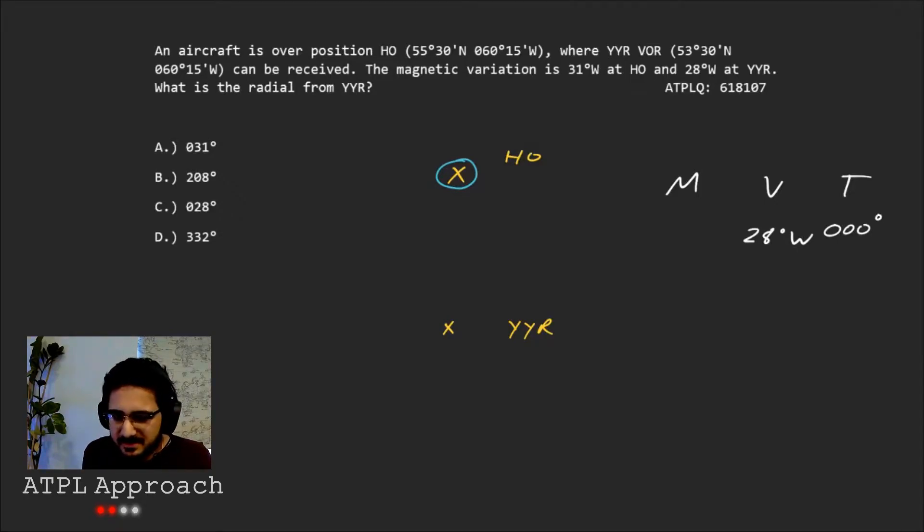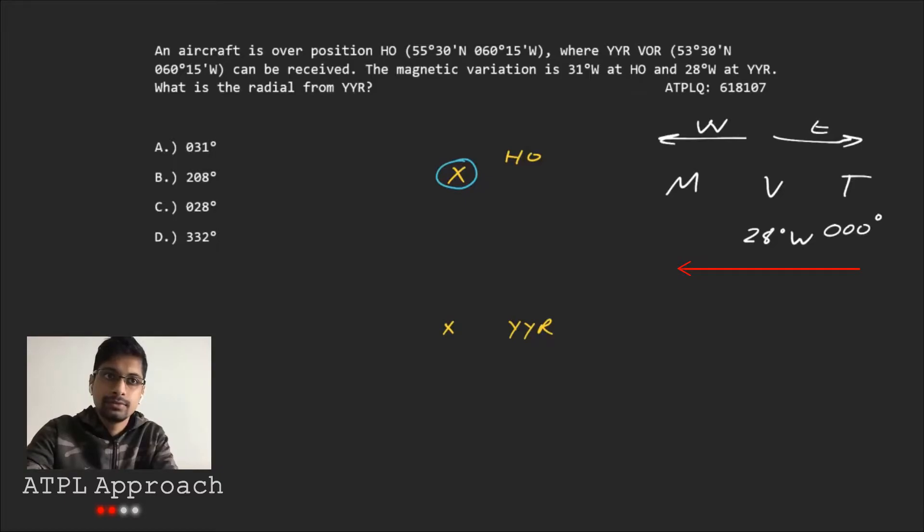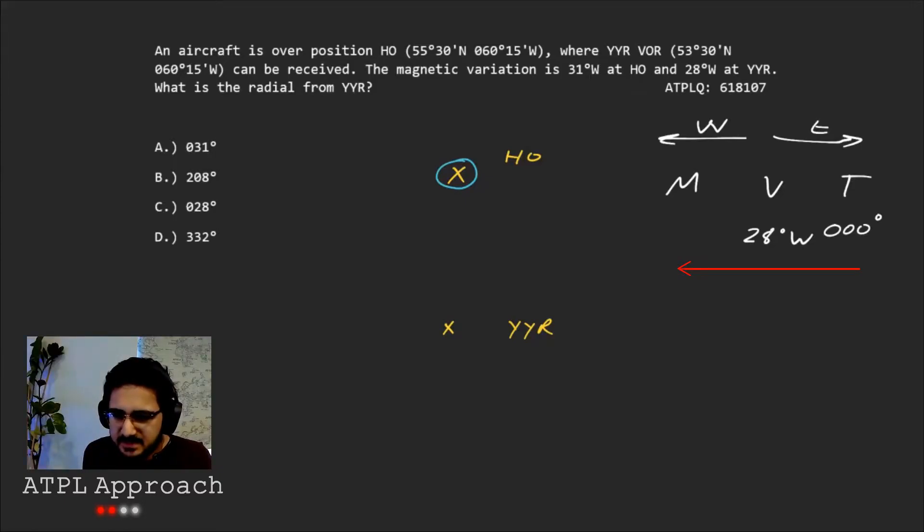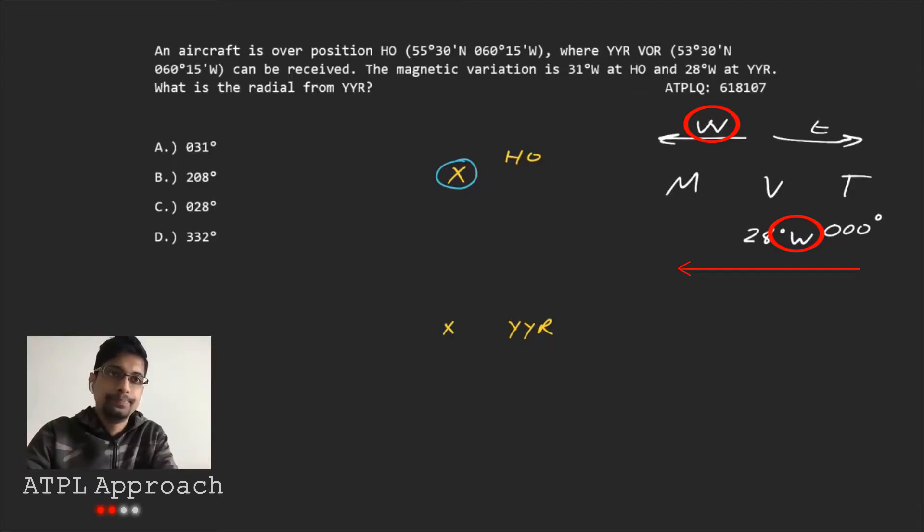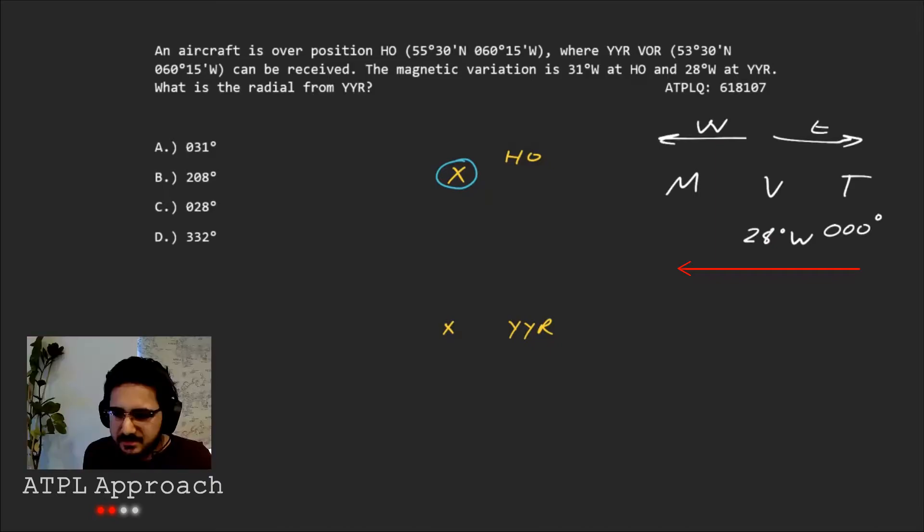And we know we're exactly 360 degrees or zero degrees. And then the variation we're going to use is 28 degrees west. What we do is think about if this is going west, right, and this is going east. If we're going in this direction to get to the magnetic one, we can see that this one and this one are the same. So we add it.